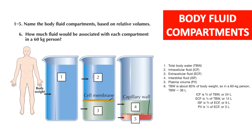ECF makes up one-third of total body water, so it will be 12 liters. Interstitial fluid makes up three-quarters of the ECF, which will be 9 liters. Plasma volume makes up one-quarter of the ECF volume, so it will be 3 liters.